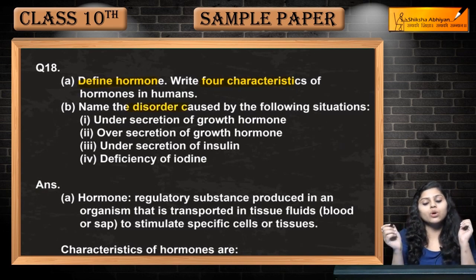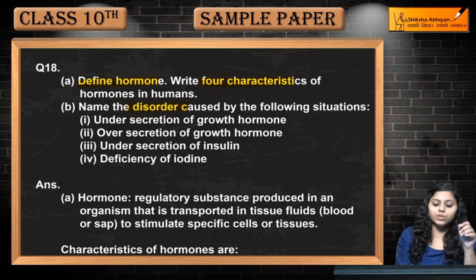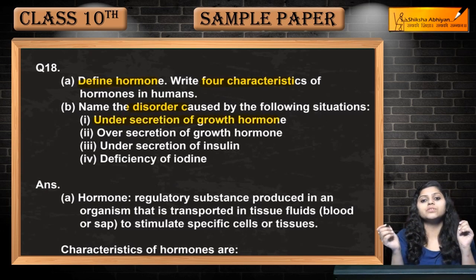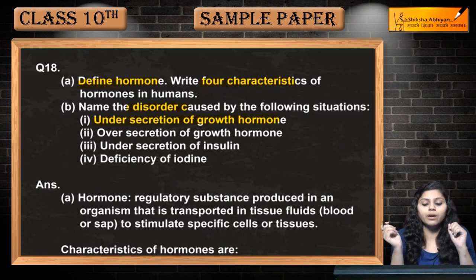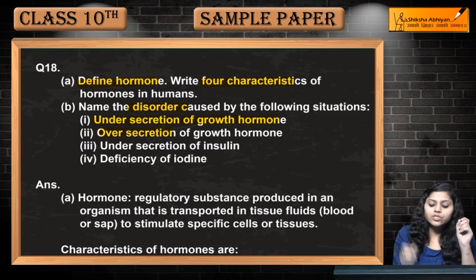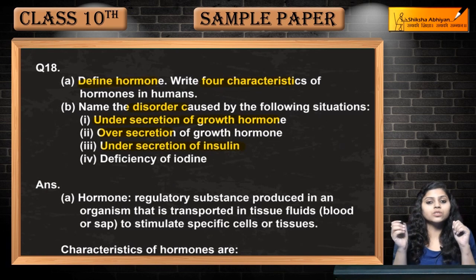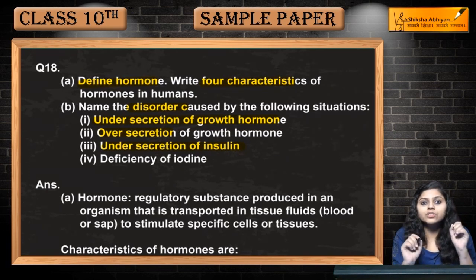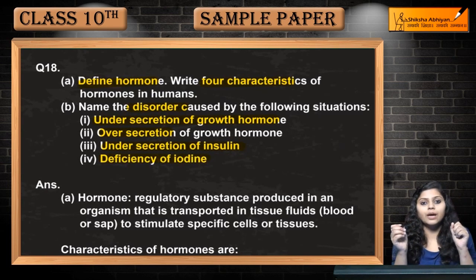Next, name the disorder caused by the following situations: number 1, under-secretion of growth hormone; number 2, over-secretion of growth hormone; number 3, under-secretion of insulin; and number 4, deficiency of iodine.